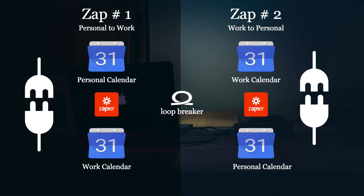But there is a catch — if we do this, we will be creating a loop. If any new event is created in our personal calendar, it gets created in our work calendar, which is fine. But then the second zap will treat that new event in the work calendar as a new one and try to create it back in the personal account. Fortunately, Zapier offers filters, and by using these filters we should be able to stop this loop and let the merge work absolutely fine.